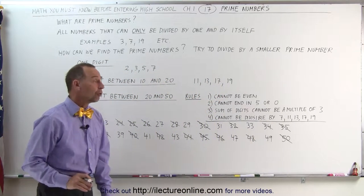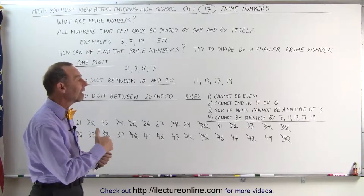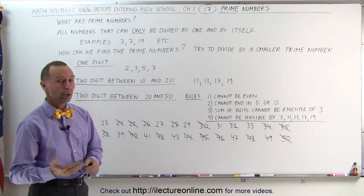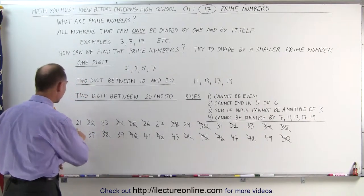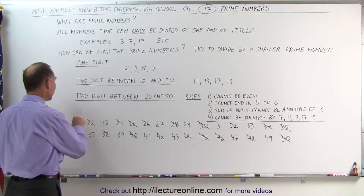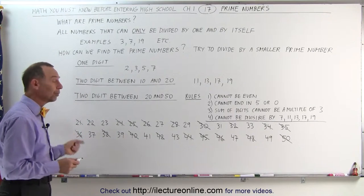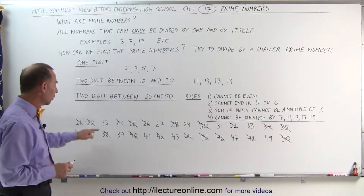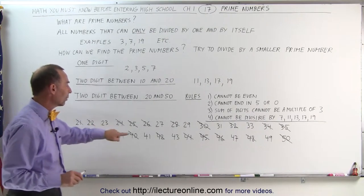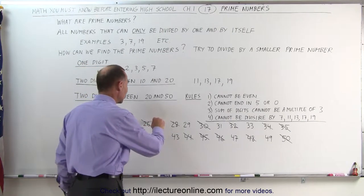So with the numbers that are left over, let's go to the next rule. Let's add up the digits and see if they add up to either a 3 or a multiple of 3. For example, 2 plus 1 is 3. That means that it's not a prime number because when the digits add up to a 3 or a multiple of 3, the number is divisible by 3. 2 plus 3 is 5, so we can't get rid of that. 2 plus 7 is 9, which is a multiple of 3, so we can get rid of that number.